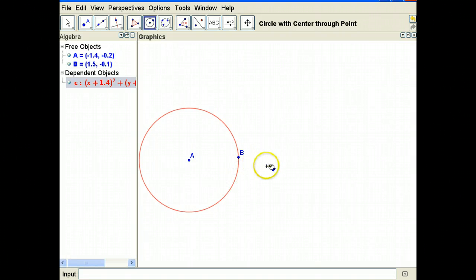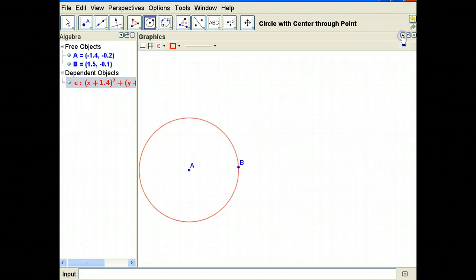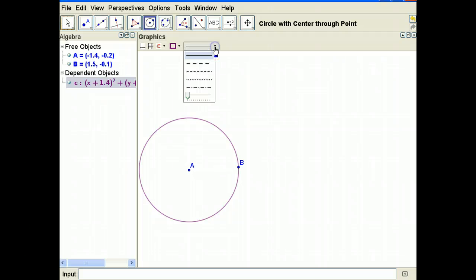That drop down menu up here in the graphics window, if you click on that you have a whole bunch of options. For example I can change the color of the circle. Let's say I want a purple circle. Let's say I want it a little thicker so I can slide this make it a little thicker. You can make it a dashed line etc.